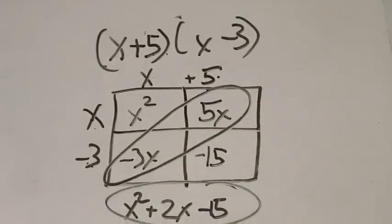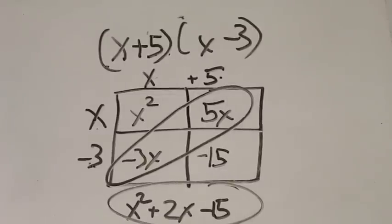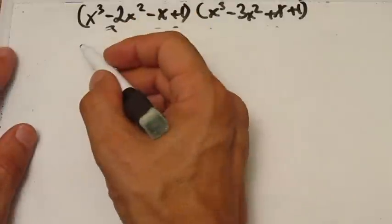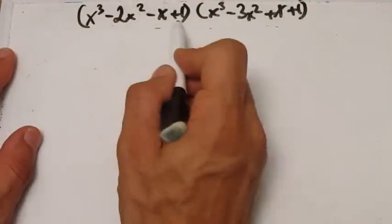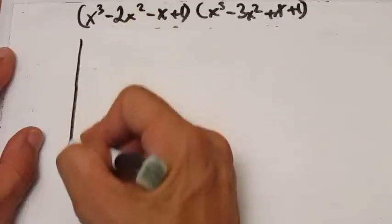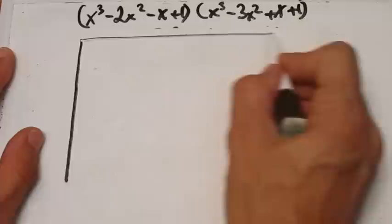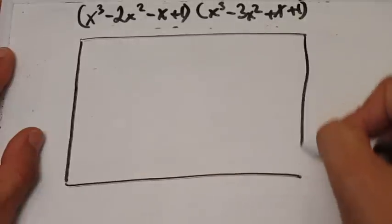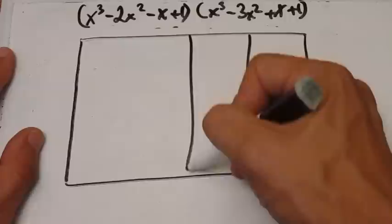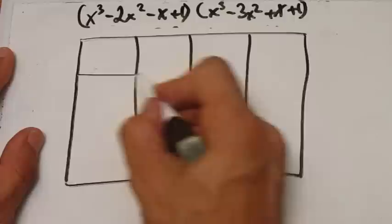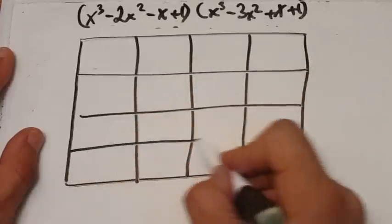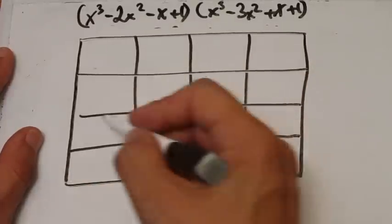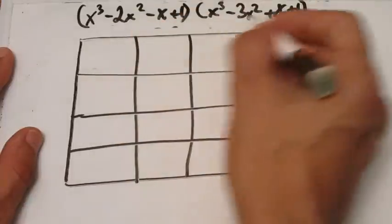Now that's not a huge advantage over FOIL for binomials. Some of you might like this box, others might say FOIL is fine. But the box method is particularly advantageous when multiplying polynomials with 3 or more terms. If you've got a 4-term polynomial times another 4-term polynomial, you just make a bigger box — a little wider and longer. You'll have 4 columns and 4 rows, a 4-by-4 box, because you've got 4 terms in each polynomial.